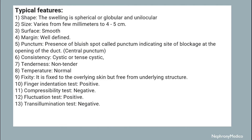Typical features: the shape — the swelling is spherical or globular and unilocular. Size varies from 3 millimeters to 4 to 5 centimeters. Surface is smooth, margin is well defined. There is presence of a bluish spot called punctum, indicating the site of blockage at the opening of the duct.